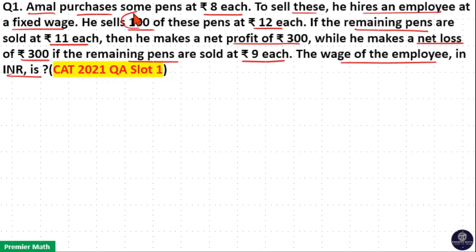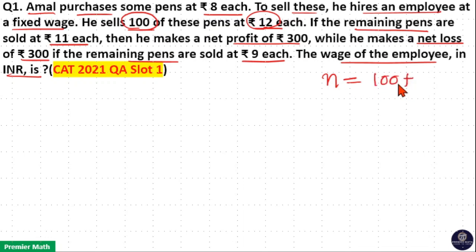He sells 100 of these pens at Rs. 12 each, meaning the total number of pens is greater than 100. That is, total number of pens N is equal to 100 plus remaining pens. I will take remaining pens as X. So, 100 plus X is the total number of pens.